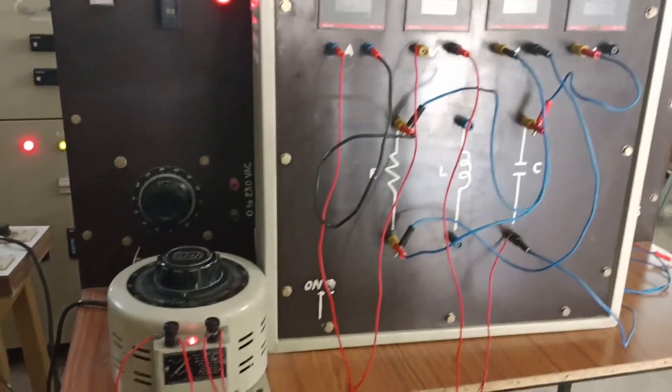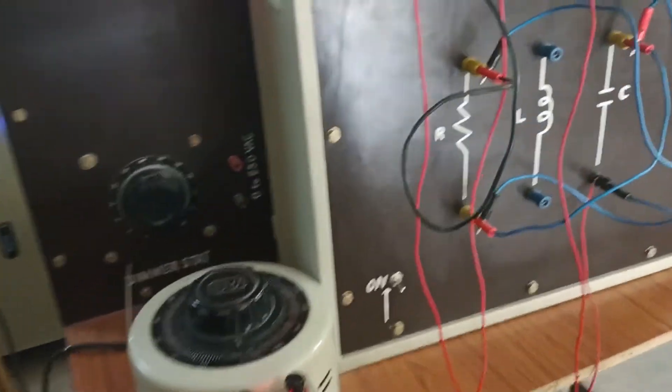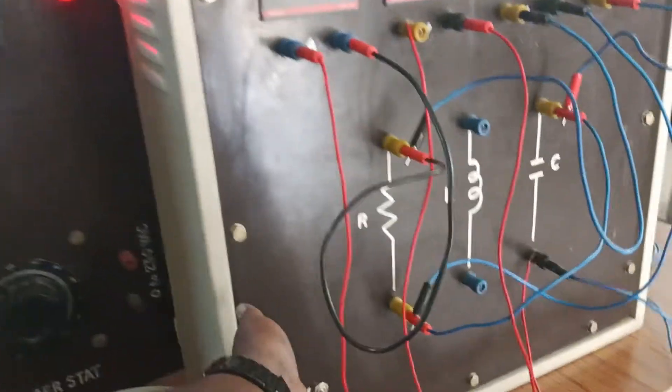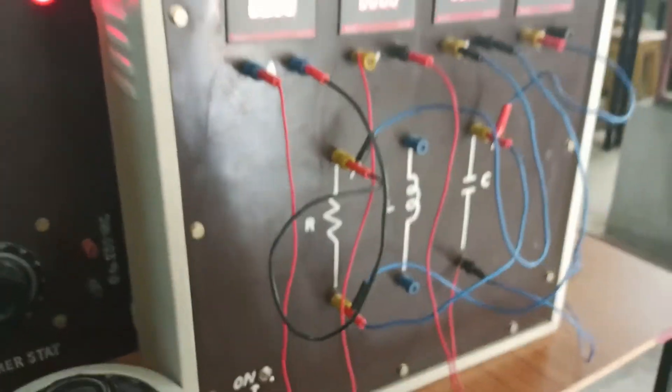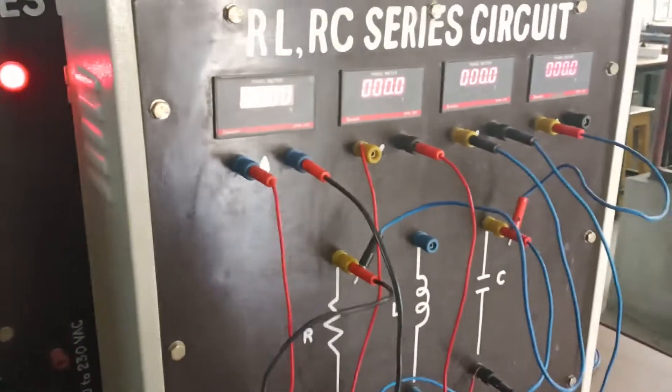You can see here I have turned on the transformer and the panel is turned off. Now turn it on. You can see the panel is also turned on. Now I will start by just applying some voltage.